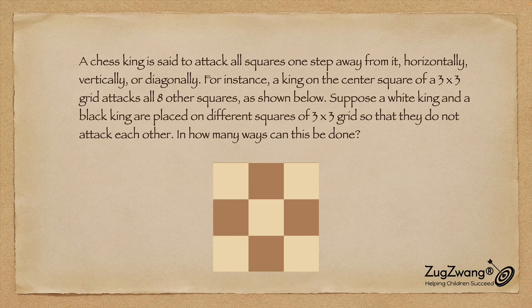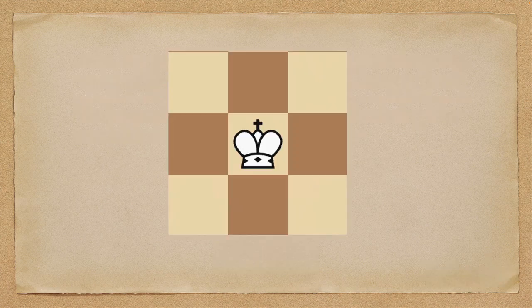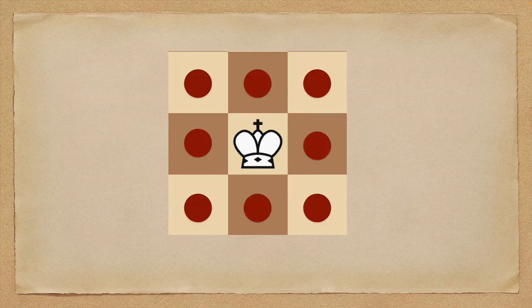Therefore no other king can be placed there — that's what we call no king's land in chess. Suppose a white king and a black king are placed on different squares within a three by three grid so that they do not attack each other. In how many ways can this be done? If there's a king in the center, you can't place a black king anywhere on the eight squares around it — the red circles mark those no king's land squares.